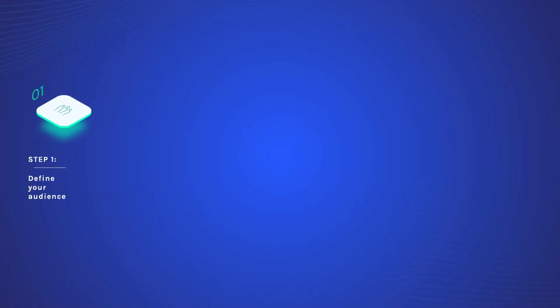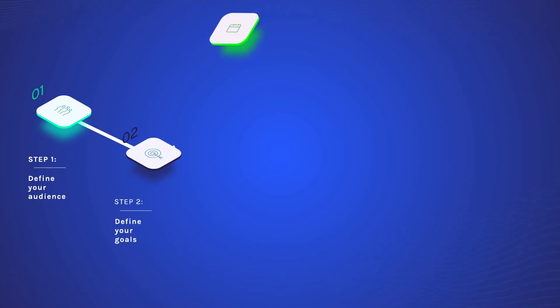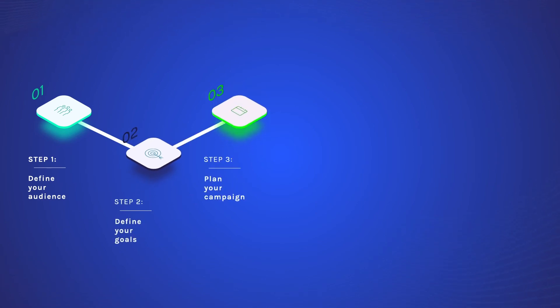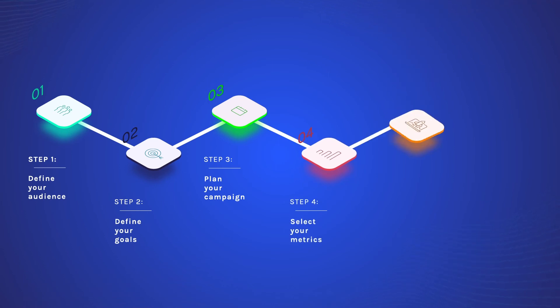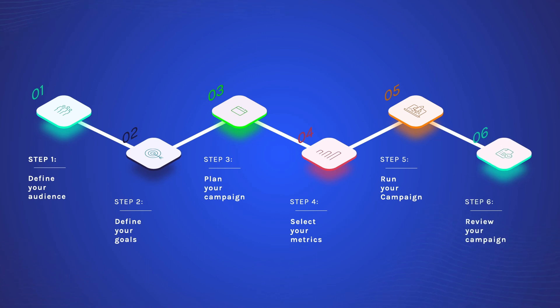I am nearly at the end of my tutorial. But before we say goodbye, I just want to run through each of the steps one last time. Step one: define your audience. Step two: define your goals. Step three: plan your campaign. Step four: select your metrics. Step five: run your campaign. And step six: review your campaign. And that's it — Cognizum's six-step process to becoming data-driven in your demand generation.